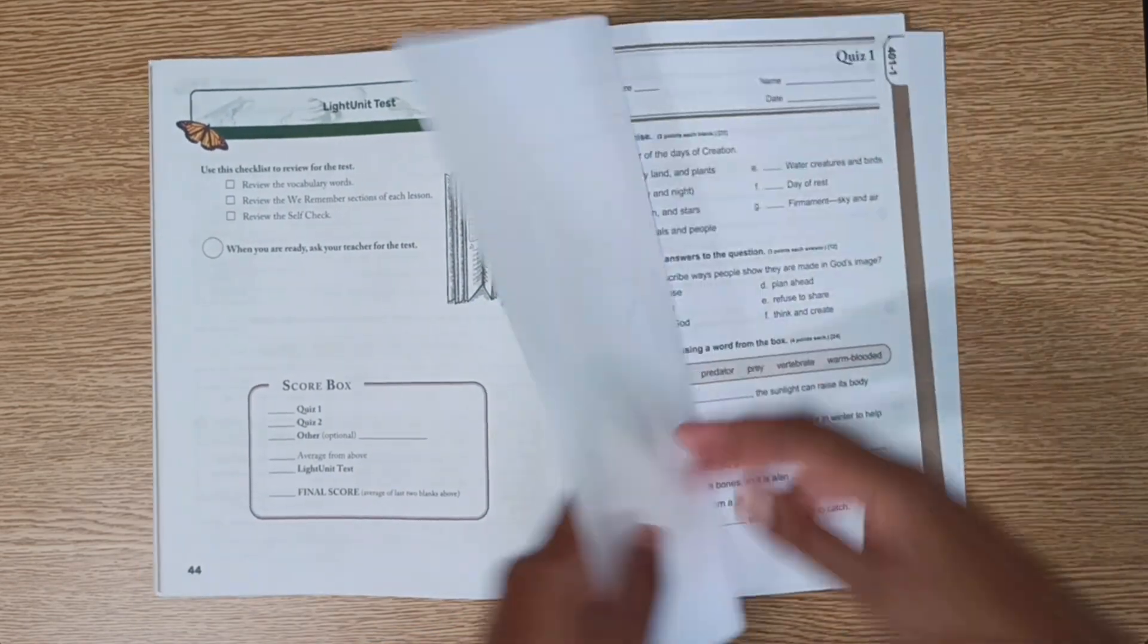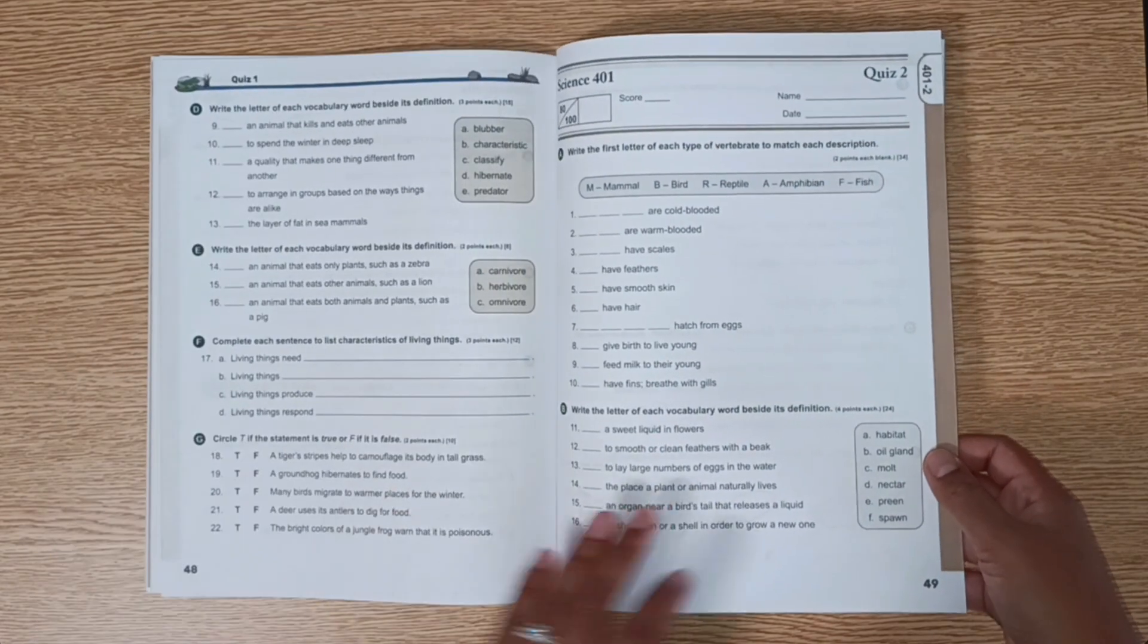There's an extra activity. And then these are the quizzes that we give for lessons 5 and 10. They're double-sided pages.